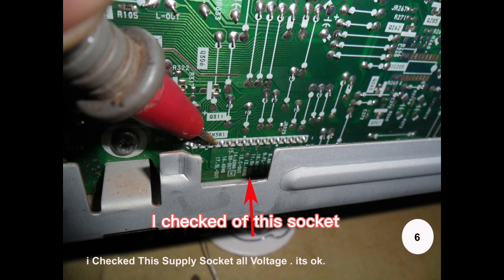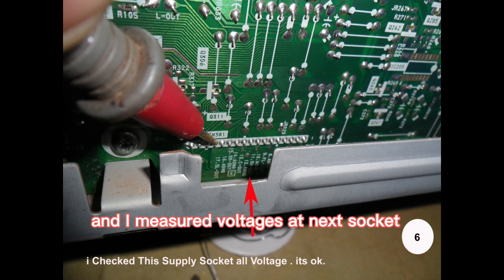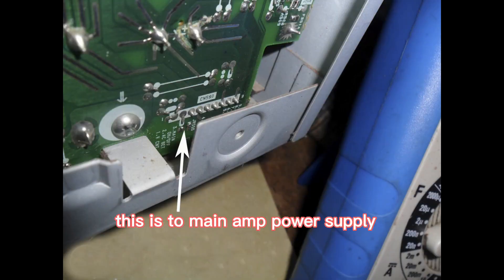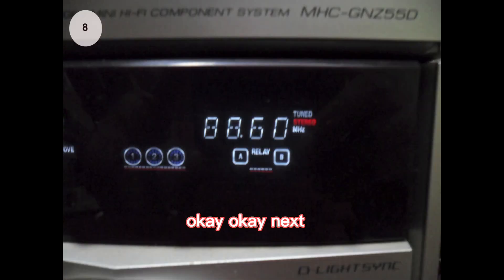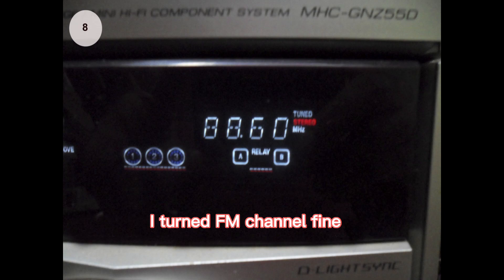I checked of this socket voltage and all signal is okay. And I measured voltages at next socket. This is to main amp power supply, all voltages are fine okay. Next I turned FM channel fine and I was increased the volume level.